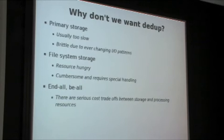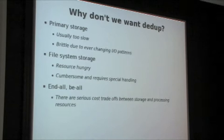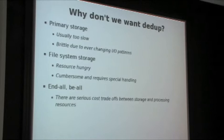So why don't we want dedup? There are a lot of reasons why we don't want it either. It's usually too slow for primary storage — you're not going to run a dedup file system on your laptop. It's actually a little bit brittle. Usually the dedup systems are tuned pretty specifically for the IO loads they generate. File system IO is all over the place: sometimes big, sometimes small, sometimes a lot, sometimes not at all. It just doesn't lend itself well for that environment. Same is true for file system storage — it's too cumbersome and resource hungry to make an efficient file server. It's simply too slow compared to a machine running Samba, and you'll incur quite a bit of delay and latency trying to rehydrate your files.